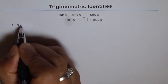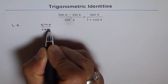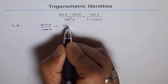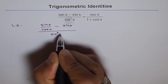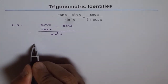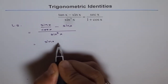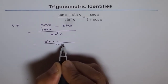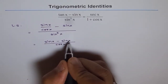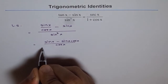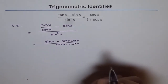Starting with the left side, we write tan x as sin x over cos x, minus sin x, all divided by sin cube x. When we simplify, we take cos x as the common denominator. In the numerator we get sin x minus cos x sin x, divided by cos x times sin cube x.